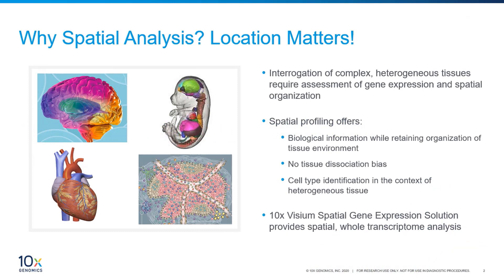So why is spatial analysis so important? Just like in real estate, location also matters in the tissue. Complex, heterogeneous tissues are comprised of multiple cell types and states. Interrogation of such tissues requires tools that can assess gene expression profiles and spatial organization of multiple cell types and states. Spatial profiling of tissues at the cellular and molecular level offers biological information while retaining organization of the tissue and cellular microenvironment.